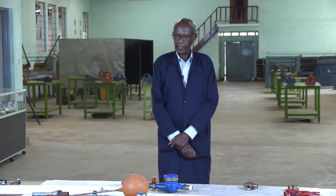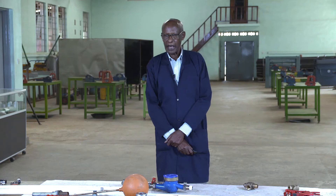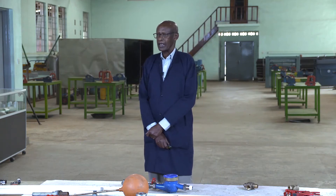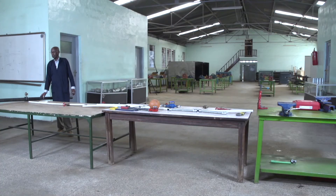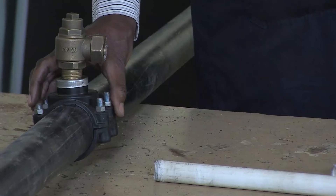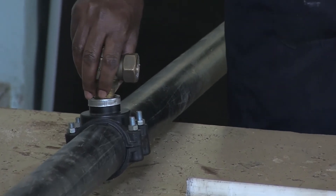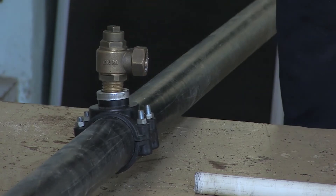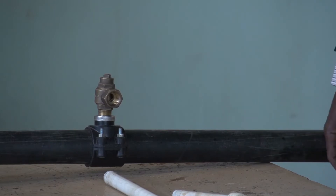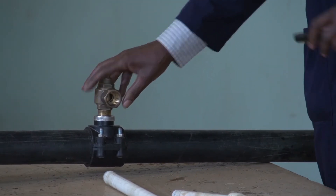Water mains are large pipes laid along the main road by WASAC to facilitate the supply of potable water to individual premises. A fitting called a ferrule is tapped or screwed onto the main pipe. Here, this black pipe is the main, this is a saddle, and this is the ferrule being tapped on the main.